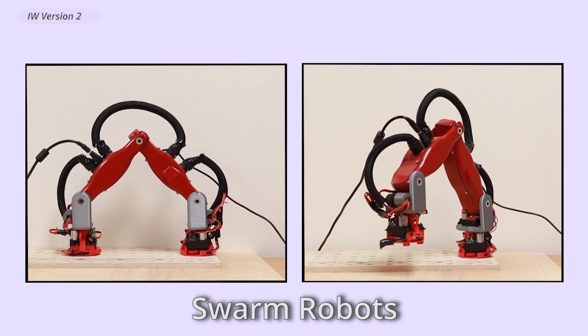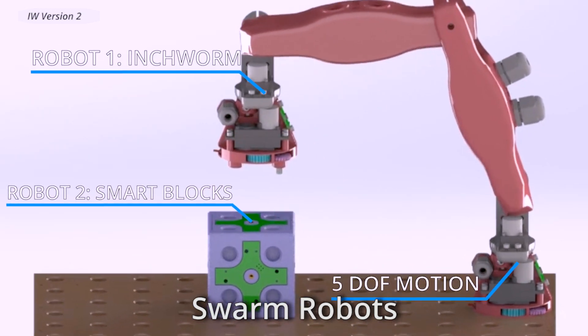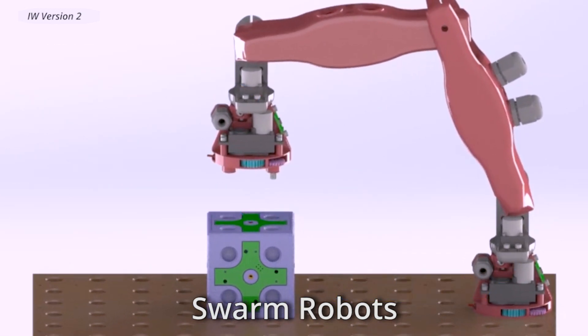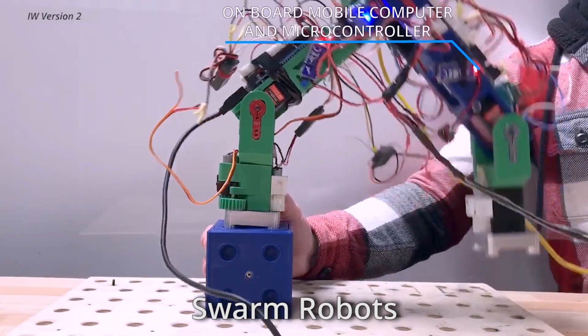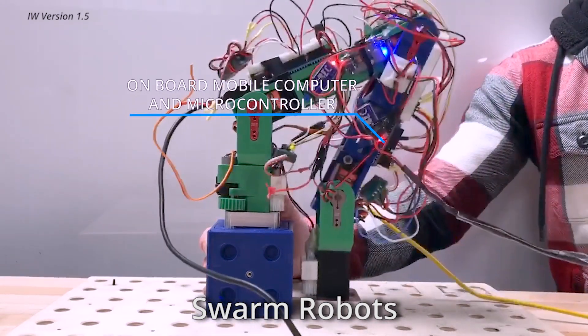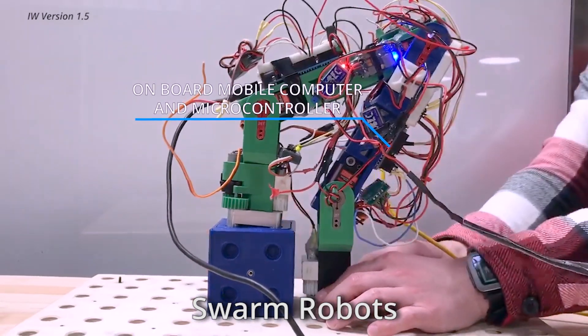The swarm construction system uses two types of robots that work collaboratively to build structures. The first type is made so that the robots can walk and climb anywhere, such as up the sides of buildings or even hang upside down.